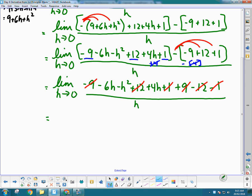Regardless, I'm going to write down what I have left and maybe do a little bit of collecting like terms. So if you notice, I've got a minus 6h and a plus 4h. So limit as h approaches 0 of negative 2h.